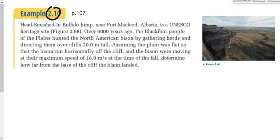It's so simple but brilliant. You want to hunt bison — bison aren't known to be the smartest animals, so you trick them into running off the edge of a cliff. They run off, and they die. Assuming the plain was flat so the bison ran horizontally off the edge of the cliff, and the bison were moving at a maximum speed of 18 meters per second at the time of the fall, we want to know how far from the base of the cliff the bison landed.